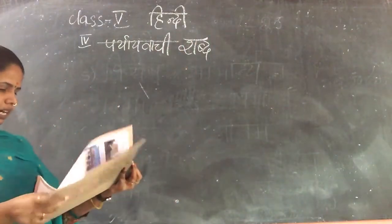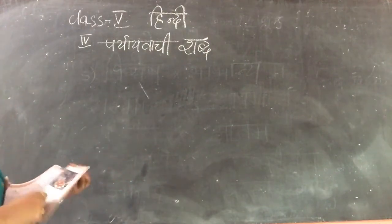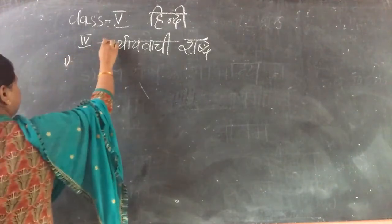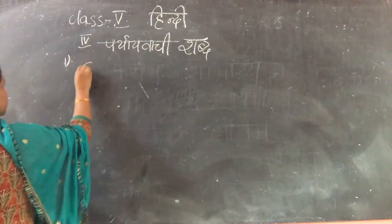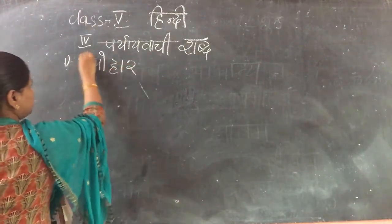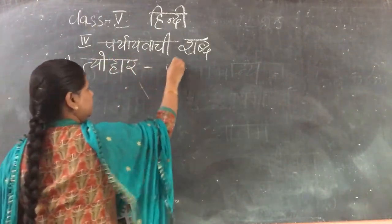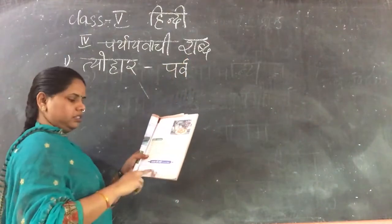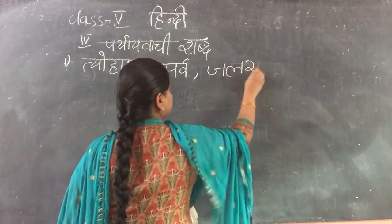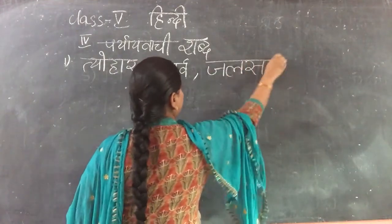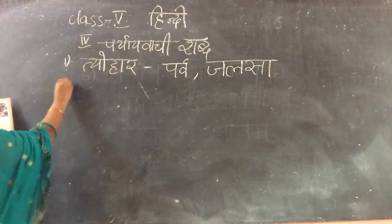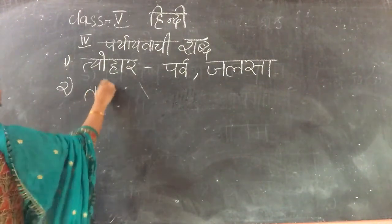Roman number four: Paryayvachi Shabd. There are about ten Paryayvachi Shabd. First one: Tiohar means Festival. In Hindi we can also call it Parv, and we can also call it Jalsa. Tiohar — Parva — Jalsa. Next one.